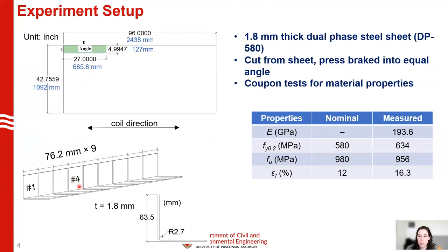We also cut coupons from the steel sheet and used that to measure material properties from the static curve of a coupon test. We found that the 0.2 percent offset yield strength is 634 megapascals in the longitudinal direction.